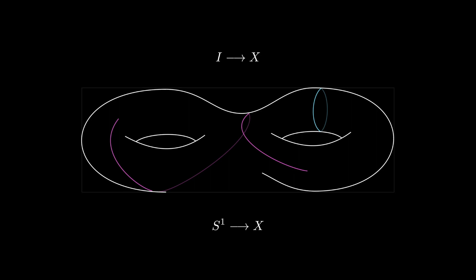So, for instance, try mapping the unit interval continuously onto my mystery object. Now, try it with a circle. Try mapping a circle onto my mystery object. In this way, we can get a pretty good idea of what this mystery object is.